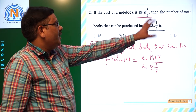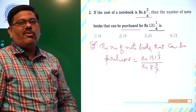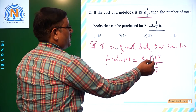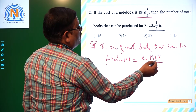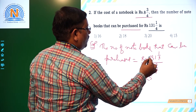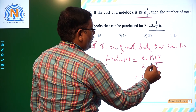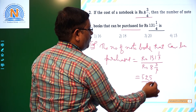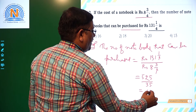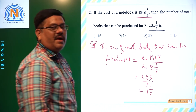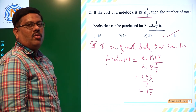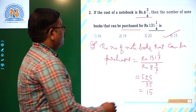Total amount divided by cost of each notebook gives you the total number of books which I can purchase. That is, converting mixed fractions to improper fractions: 131 1/4 = 525/4 and 8 3/4 = 35/4. So 525/4 divided by 35/4 — the 4s cancel — giving 525/35 = 15. So 15 notebooks I can purchase.